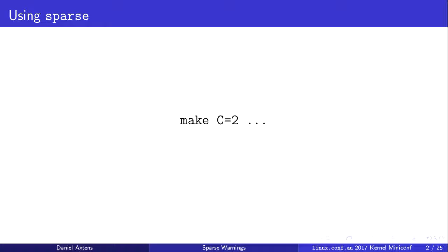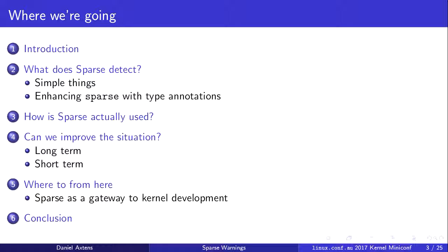So we're going to look at these things today. We've looked at what SPARS is. We're going to look at the things that it detects — both some simple static analysis things and more when we give it type annotations. We're going to look at how we use it in the kernel, or more accurately, don't use it. And we're going to look at how we can improve that situation, both long-term and with a tool to make SPARS more useful in the short term.